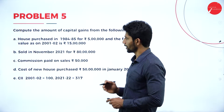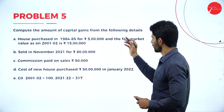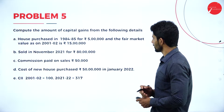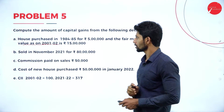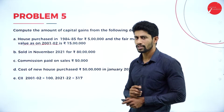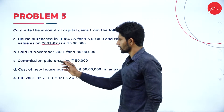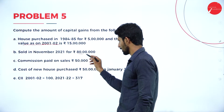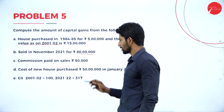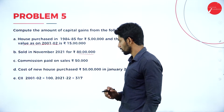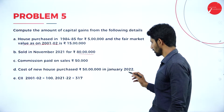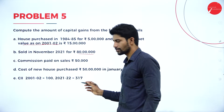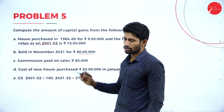Problem number five: Compute the amount of capital gains from the following details. A house was purchased in 1984-85 for rupees 5 lakhs. The fair market value on 2001-2002 is rupees 15 lakhs. The house was sold in November 2021 for rupees 80 lakhs. Commission paid on sales is rupees 50,000. Cost of new house purchased is rupees 50 lakhs in January 2022. The CII value for 2001-02 is 100 and for 2021-22 is 317.